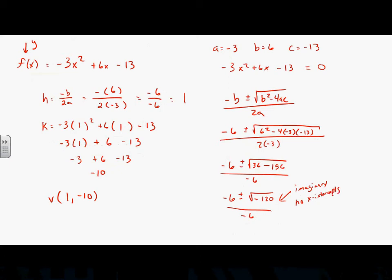We set y to zero for x-intercepts; now we let x equal zero for the y-intercept. With x equals 0, the expression becomes negative 3 times 0 squared plus 6 times 0 minus 13. The x-terms cancel out, leaving just negative 13 as the y-intercept. In general form, the y-intercept is always c.